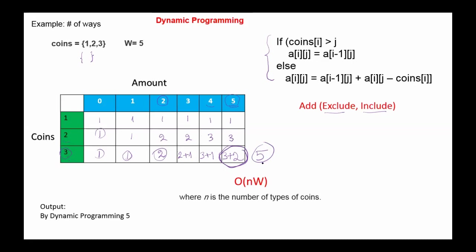There are 5 ways to get the amount 5 using coins 1, 2, and 3. The complexity of this algorithm is O(N·W), which is significantly better than the recursive strategy's O(2^N).